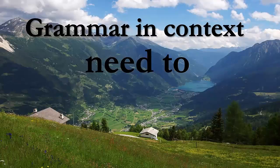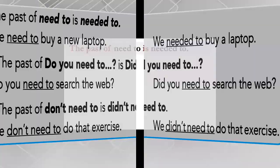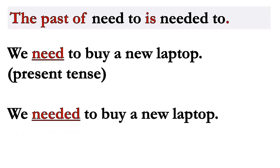Next, let's study grammar in context: 'need to.' The past of 'need to' is 'needed to.' For example: we need to buy a new laptop — this is the present tense. We needed to buy a new laptop — this is the past tense.